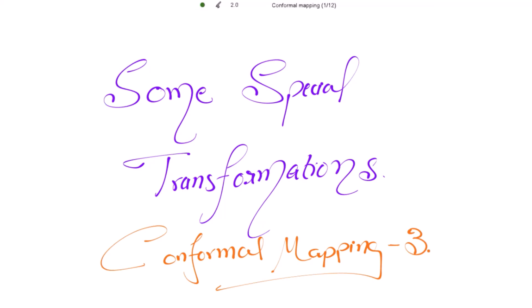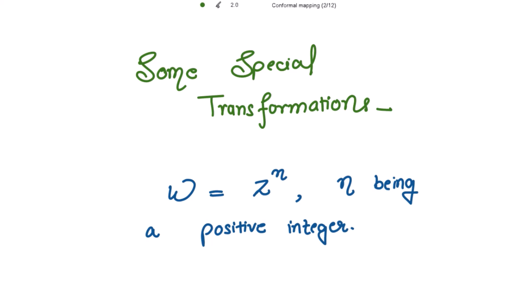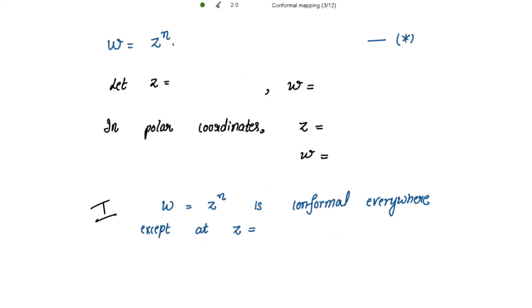We are going to start this new course — conformal mapping part 3 — and we are learning about some special kind of transformations. The first one is w = z^n where n is a positive integer. For w = z^n, we take z = x + iy in Cartesian coordinates, and w = u + iv. In polar coordinates, we take z = re^(iθ) where θ is the argument, and w = ρe^(iφ).